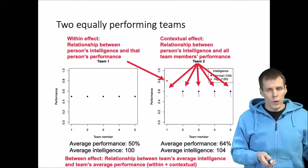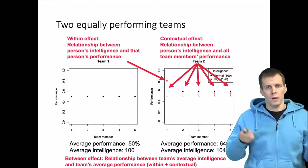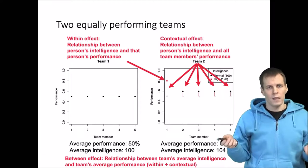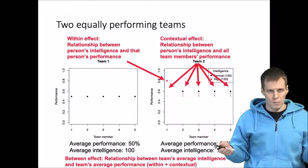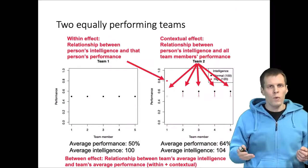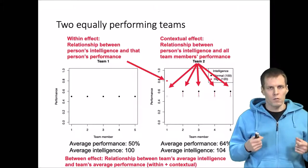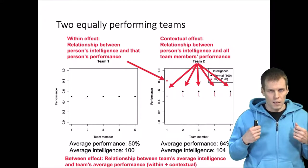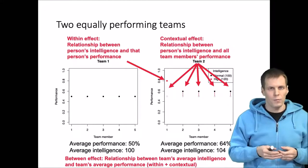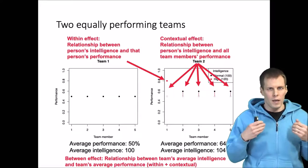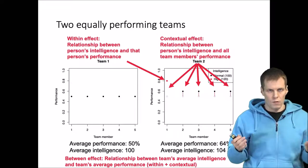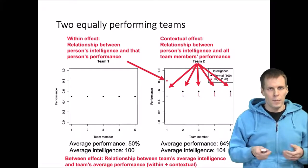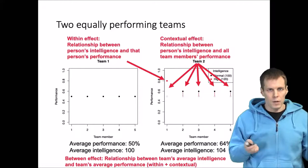The within effect and contextual effect basically correspond to two causal mechanisms: how much better I am because of my intelligence or some other attribute, and how much my attribute has an effect on the others or everyone in the team. And then the between effect is simply the sum of these two causal effects.